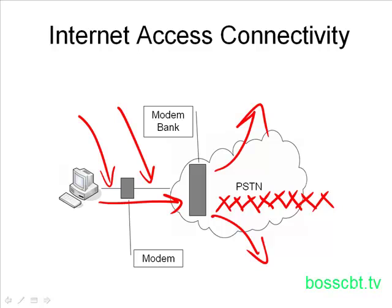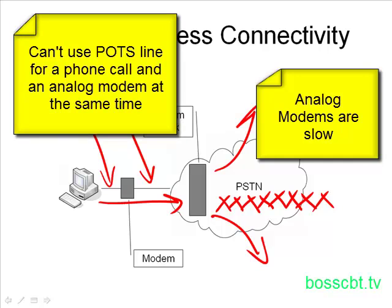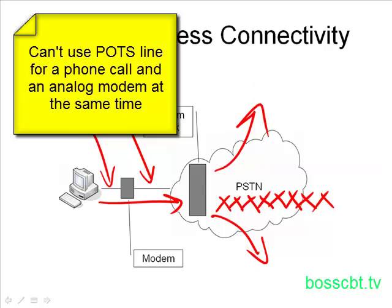This type of connectivity isn't too popular these days because analog modems are limited in how fast they can transmit data — the bits per second we just talked about. Compared to other broadband internet options today, modems are not too favorable, though it is still an option. Another drawback is you cannot use your phone line for an analog modem and a phone call at the same time. If you're on the phone, you cannot use your analog modem, and likewise if your modem is connected to the phone line, you cannot make a regular voice call simultaneously — so it's a bit of a drawback.